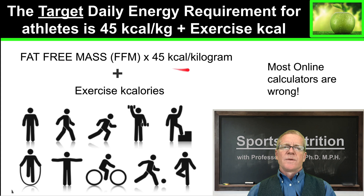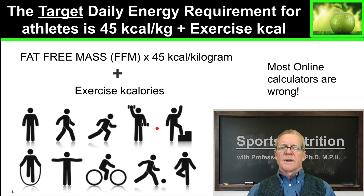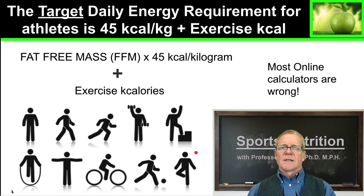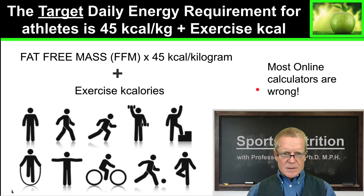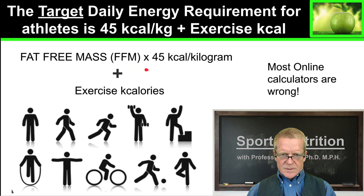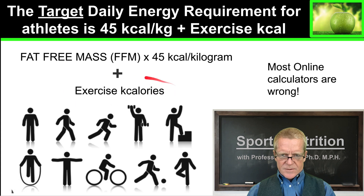Fat-free mass times 45 kilocalories per kilogram, and then you add your exercise calories. That exercise can be walking, running, weight training, stair climbing, skipping, cycling, or playing any sport — even yoga burns kilocalories. If you compare this to the USDA calculator or most online calculators, you will find they do not give you sufficient calories to support an athletic lifestyle. This is the correct way to find the number of kilocalories you need. On days you are burning more kilocalories, you are going to have to ingest more kilocalories.